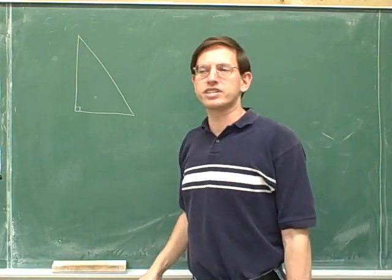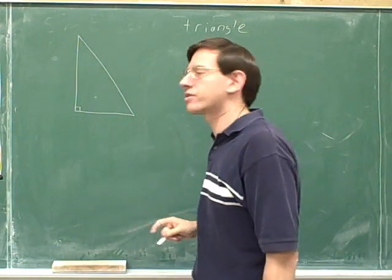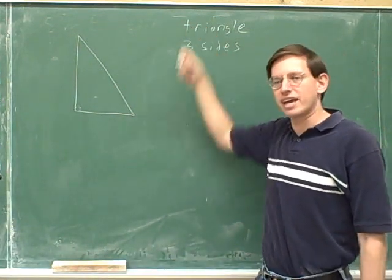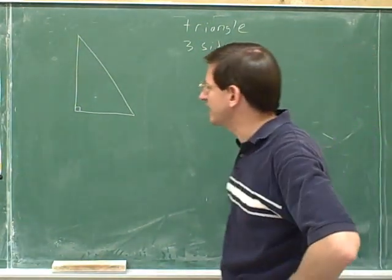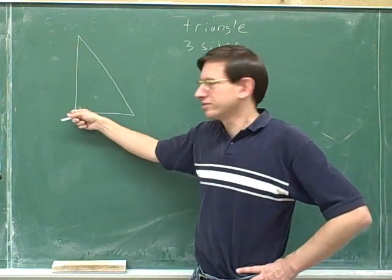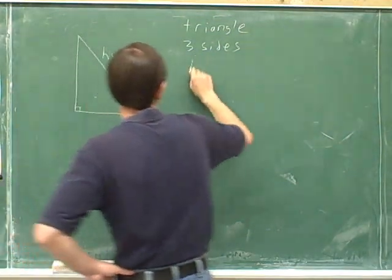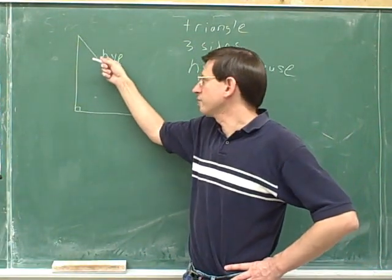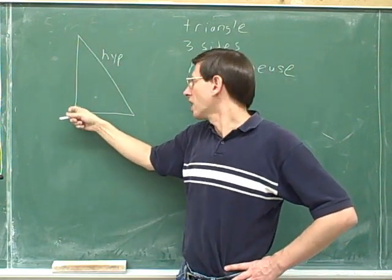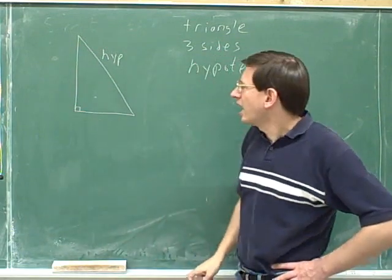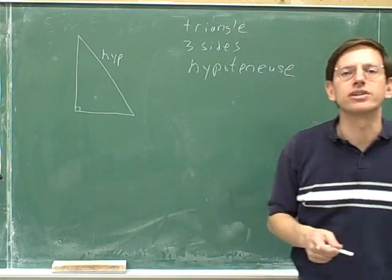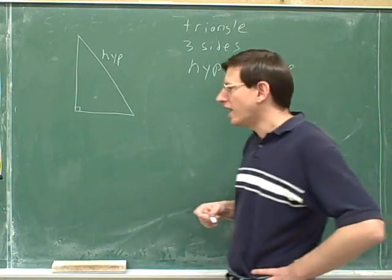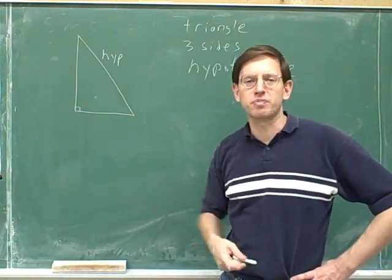A triangle has three sides — "tri" means three, so a triangle has three angles and three sides. One of the sides is opposite the right angle, and that's called the hypotenuse. The hypotenuse is opposite the 90 degree angle and is always the longest side of a right triangle. That's because it's opposite the biggest angle, and in a right triangle the biggest angle is always the right angle.